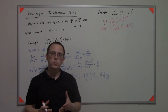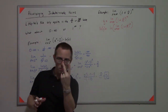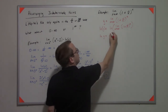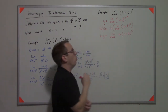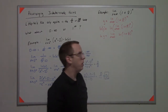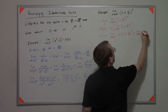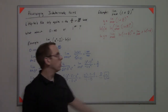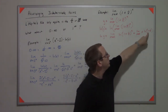The natural log is a continuous function, and a continuous function of a limit allows you to basically swap — you can take the limit of the function passed through. So we can say that the natural log of y is the limit of the natural log of (1 + 1/x)^x. Using the properties of logs, we can bring the exponent down: that's the limit as x approaches infinity of x times natural log of (1 + 1/x). This gives us a 0 times infinity case.